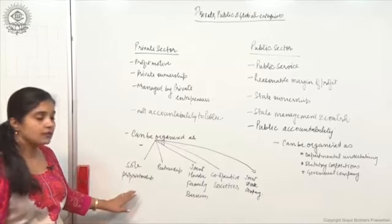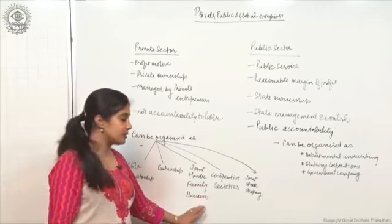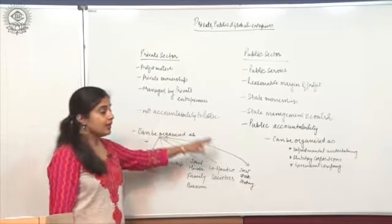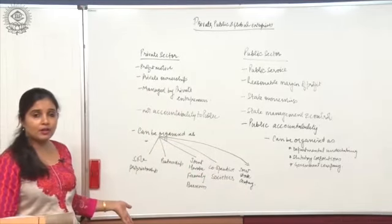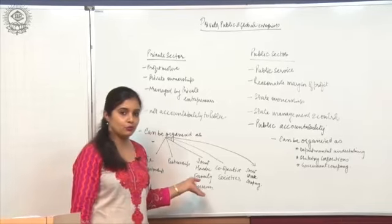And finally, they can be organized as sole proprietorship, partnership, joint Hindu family business, cooperative societies and joint stock company. I have not explained all this in much detail because I have already covered this in chapter 2.